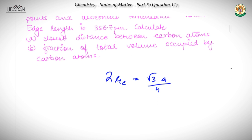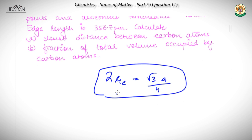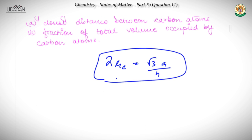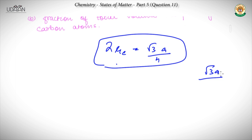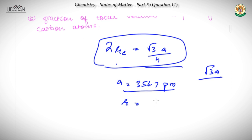R_C is the radius of the carbon atom, as also explained in question number 4. The tetrahedral void is occupied, and the body diagonal is root 3 times a. Between two atoms in alternate tetrahedral voids, the distance is root 3a by 4, so 2R_C equals root 3a by 4. With A given as 356.7 picometers, this gives a closest C-C distance of 154.45 picometers.